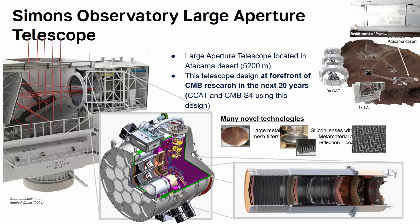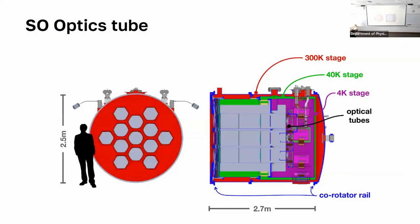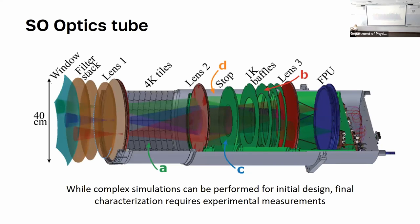The telescope itself consists of a couple of mirrors placed in a cross-Dragone pattern, plus a few separate optics tubes. Each optics tube is a long cylinder. There are about four optics tubes inside. Each optics tube consists of a bunch of lenses and cryogenic stages to allow cooling to cryogenic temperatures — because we have very low signal and we want the system to be as cold as possible.